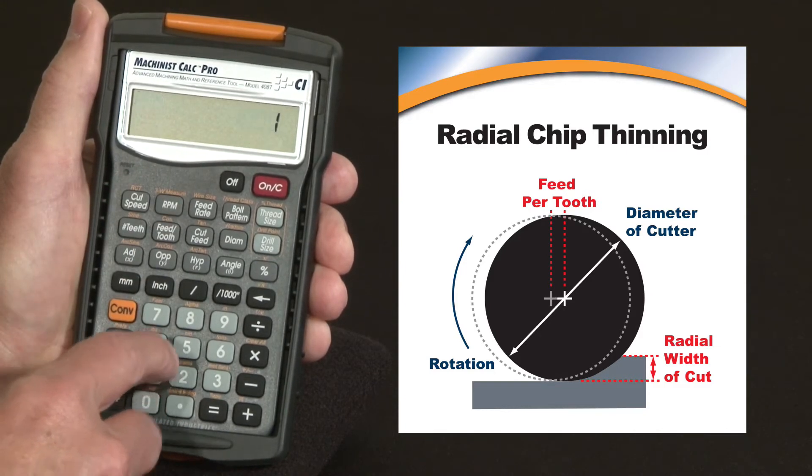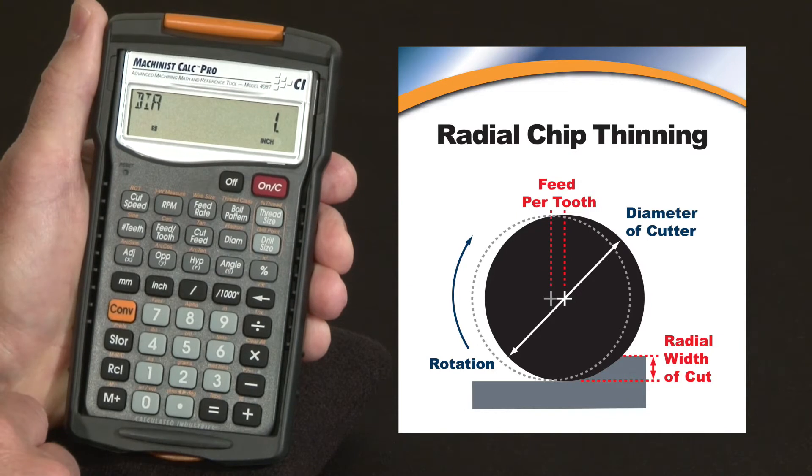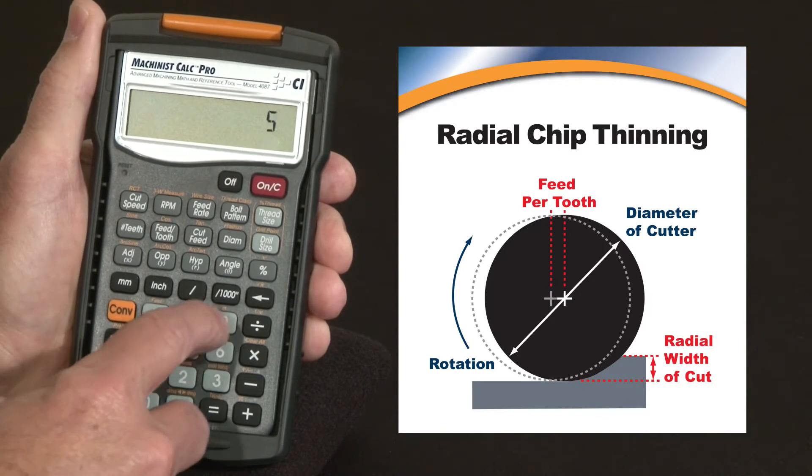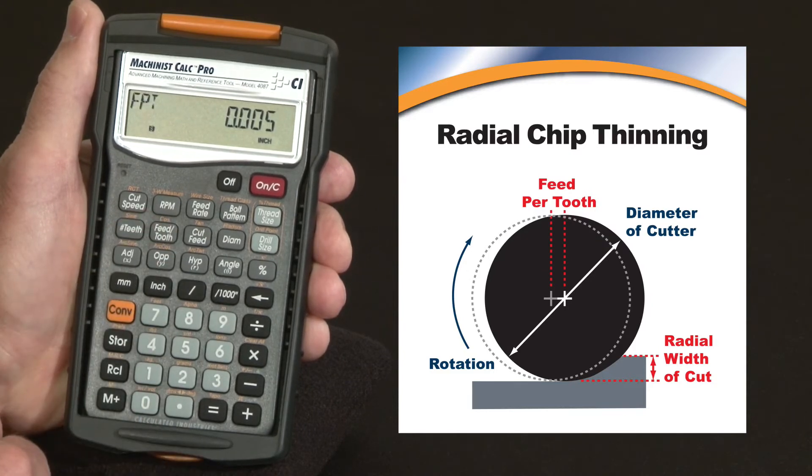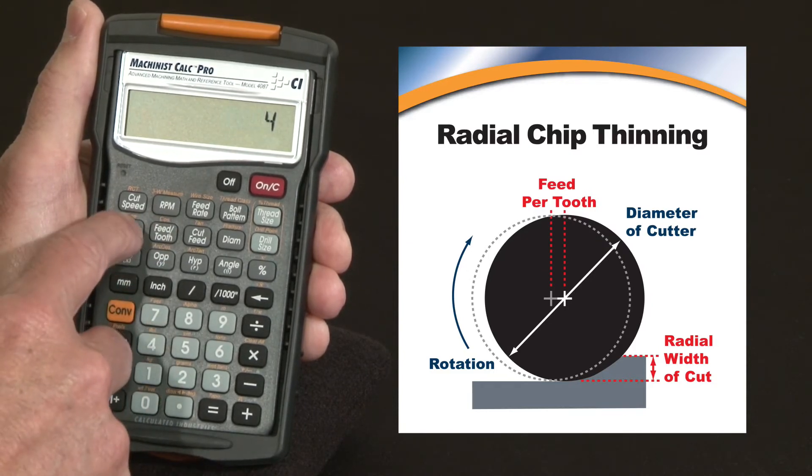You're using a 1 inch diameter tool. The chip load on that is say 5 thousandths, using our thousandths key as our feed per tooth, and it's a 4 tooth tool. So 4 is our number of teeth.